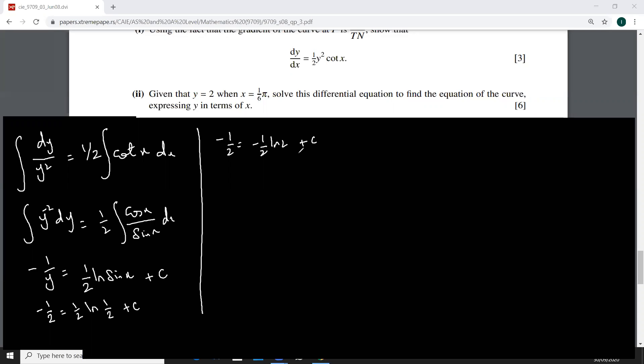One over two means two raised to minus one, and then that minus one goes out. So this c is going to be half ln... This one over two is basically two raised to minus one, so minus one goes out here multiplies with half. So this is your c.